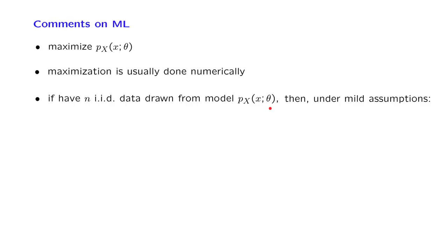Then, under mild assumptions, the maximum likelihood estimator has the property that it is consistent. That is, as we draw more and more data, our estimate is going to converge to the true value of the parameter.